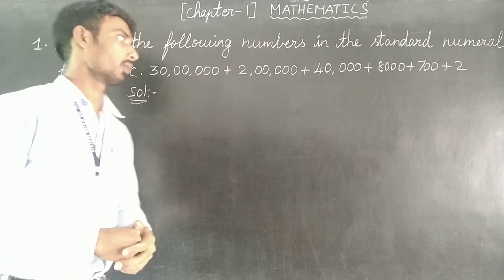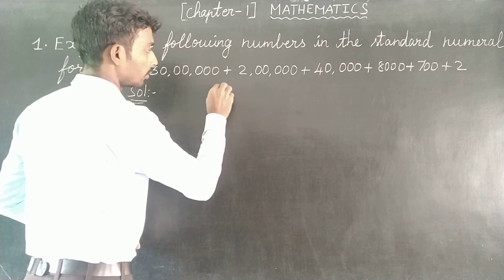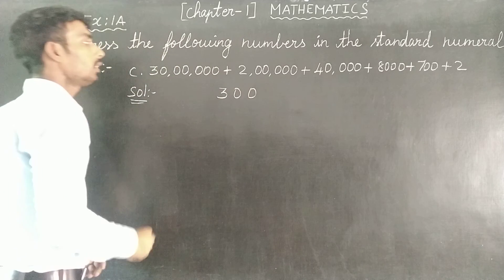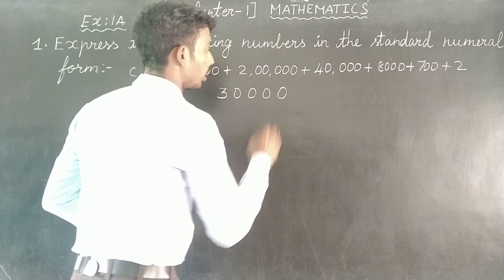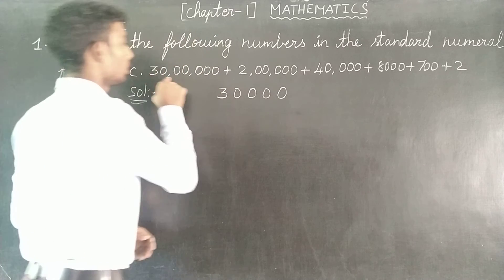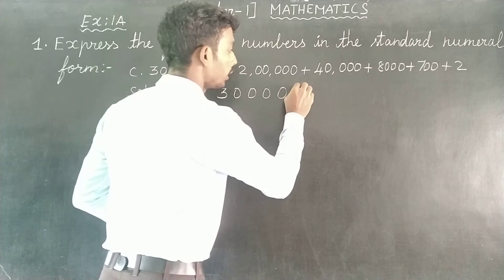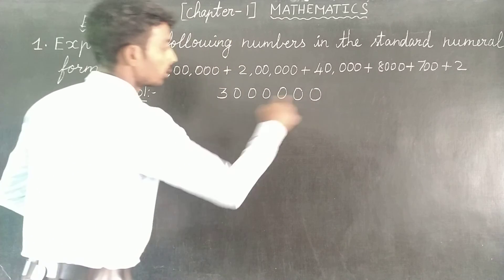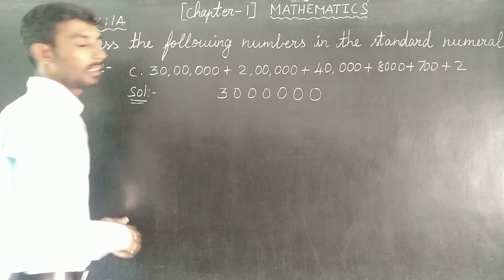30 lakh plus 2 lakh plus 40 thousand plus 8 thousand plus 7 hundred... So we are going to change to standard numeral form. First, 30 lakh — counting 1, 2, 3, 4, 5, 6 — so we write 3, 0. Next, 2 lakh: 2, 0.